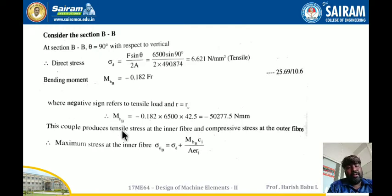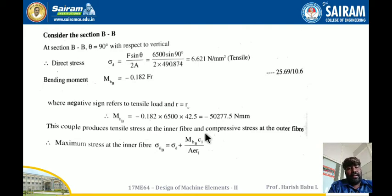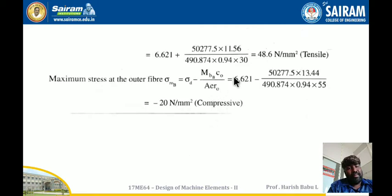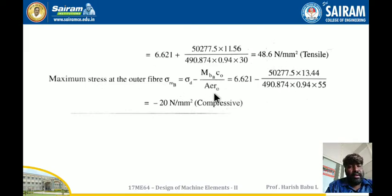The bending moment at BB produces tensile stress at the inner fiber and compressive stress at the outer fiber — the opposite of cross-section A. The maximum stress at the inner fiber Sigma_RI_B equals Sigma_D plus MB·CI divided by (A·e·RI), giving 48.6 N/mm² — tensile. For the outer fiber, the stress equals minus 20 N/mm² — compressive.